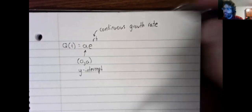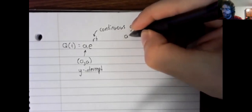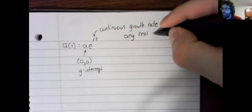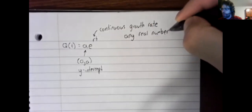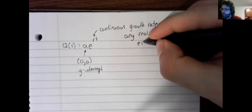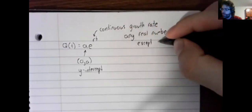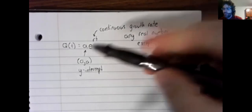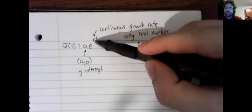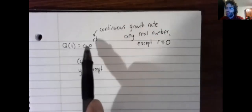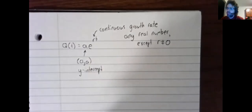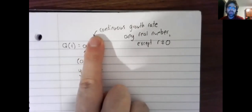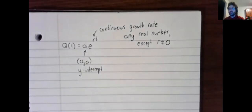And this r can be pretty much any real number, with the exception that it can't be zero. E to the power of zero would just be one. Multiplication by one wouldn't do anything. So if r were zero, this would just be constant. Not interesting.